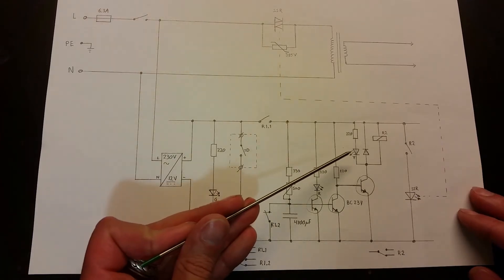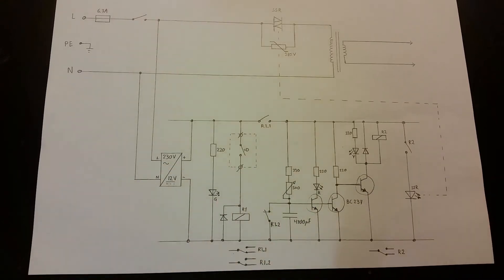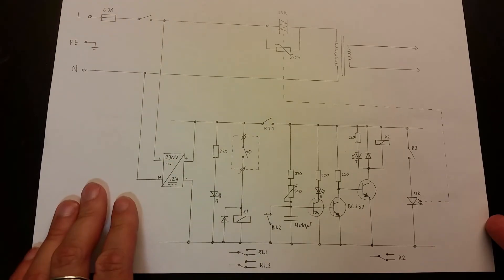And here's the yellow LED that says that this R2 is turned on, which means that the SSR is turned on. So it's quite a simple circuit.